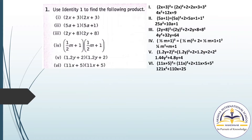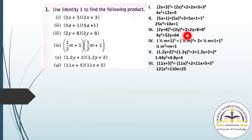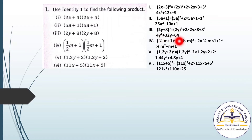For question number 3: (2Y + 8) and (2Y + 8), which is (2Y + 8) whole square. Applying the identity: (2Y)² plus 2 into 2Y into 8 plus 8 square. (2Y)² gives 4Y square, 2 into 2Y into 8 gives 32Y, and 8 square is 64. So the answer is 4Y square plus 32Y plus 64.